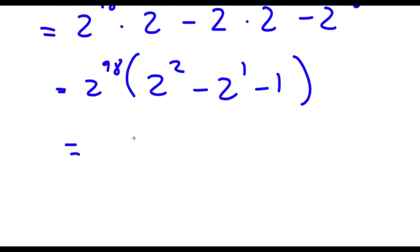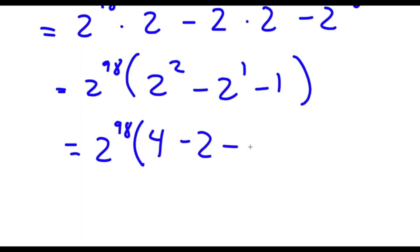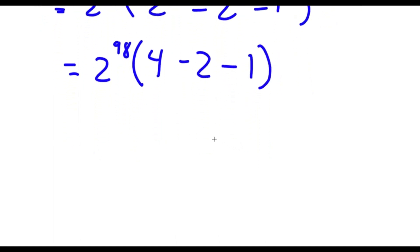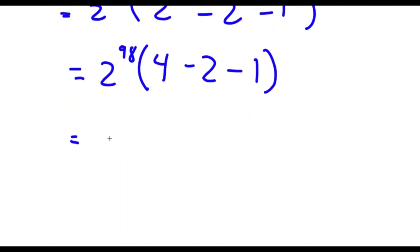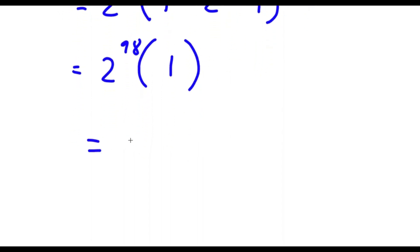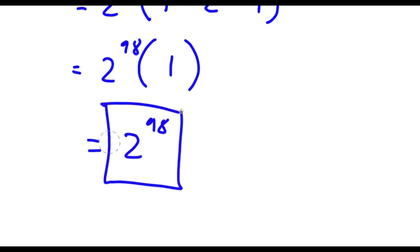Now I'm going to simplify. 2 to the power of 2 is 4, minus 2 to the power of 1 which is 2, minus 1. So that gives me 2 to the power of 98 times 4 minus 2 is 2, and 2 minus 1 is 1. So I have 2 to the power of 98 times 1, which simply equals 2 to the power of 98. That's my answer.